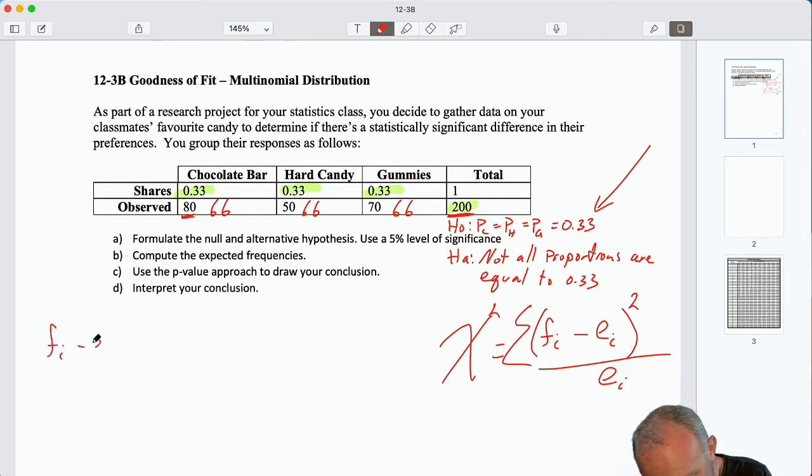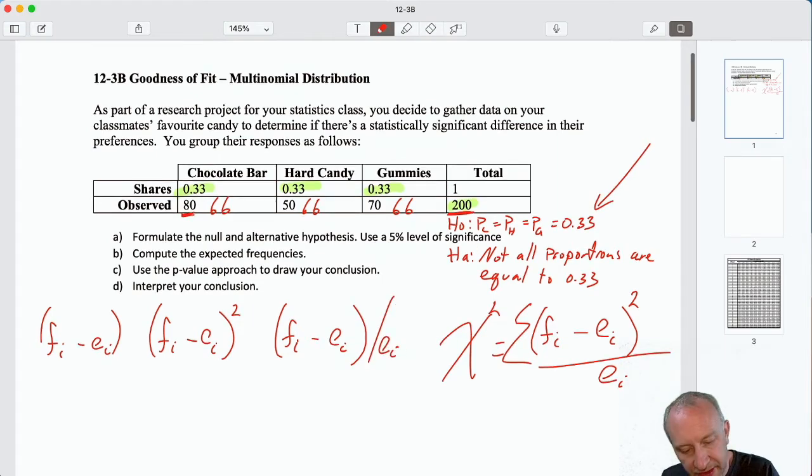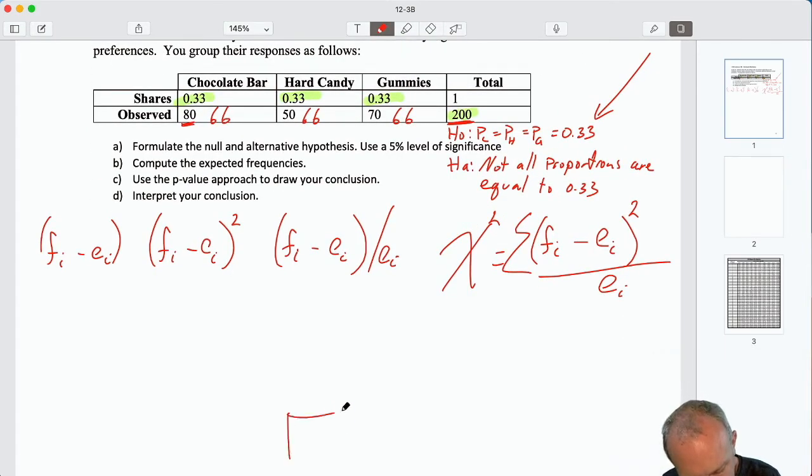We've only got a couple of calculations this time. We calculate those differences. We square them, we divide by that expected value. And then I will add these up, and down here we'll have our chi-squared test statistic. So let's get going the first one. So I'm just looking at these differences, between what we observe and what we would expect to observe.